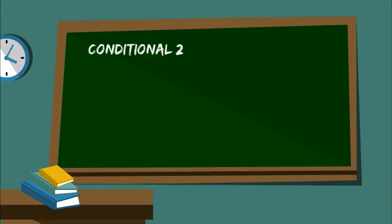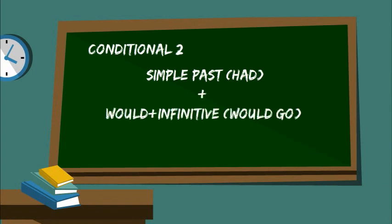Conditional two, on the other hand, uses simple past, for example, had, and would plus infinitive, for example, would go. There is little chance, or even hardly any chance at all, that this will happen.